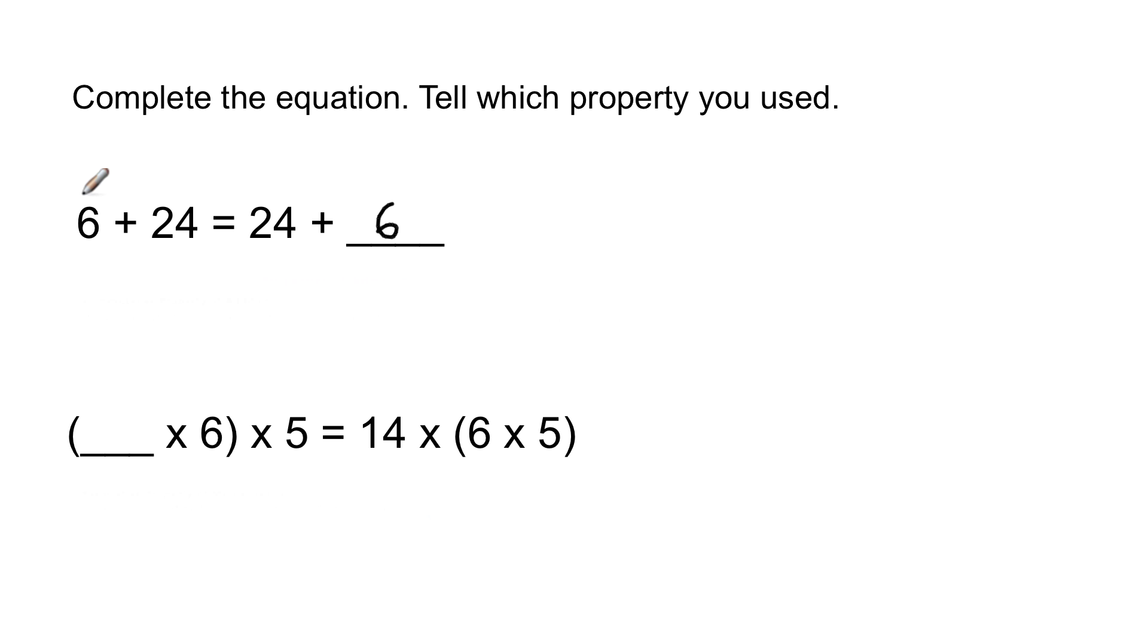Tell which property was used. And this is an order problem. So the 6 came before the 24 on one side of the equal sign. Then the 24 came before the 6 on the other side. So look on your properties and see which one talks about order. It is, of course, the commutative property. So this is an example, another example of what the commutative property looks like. And here we're just identifying which property you used.